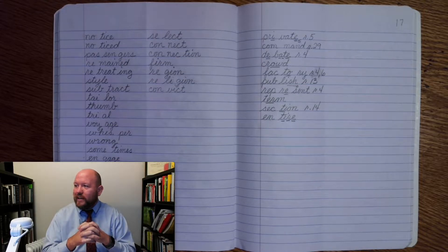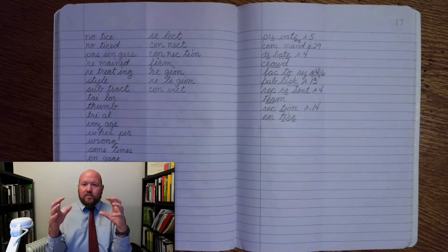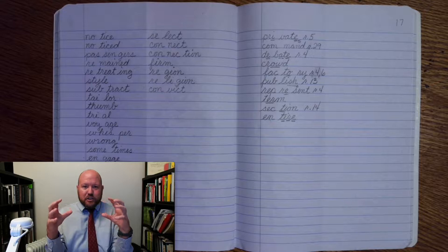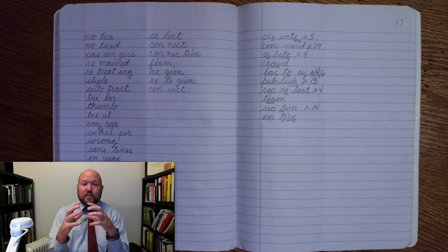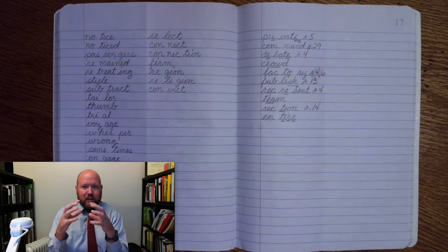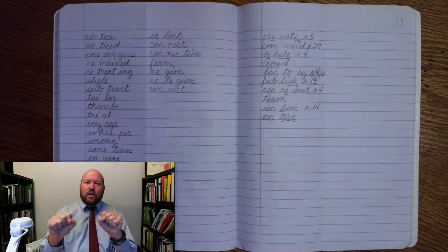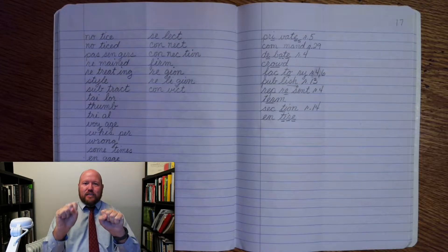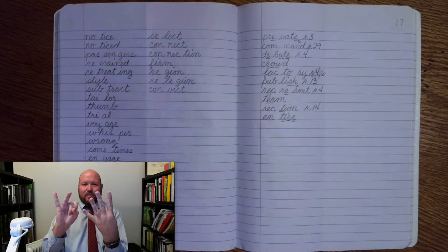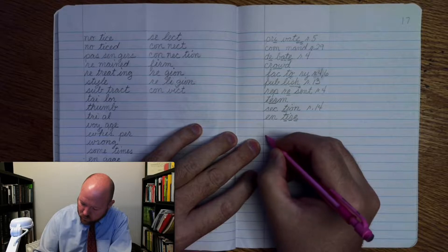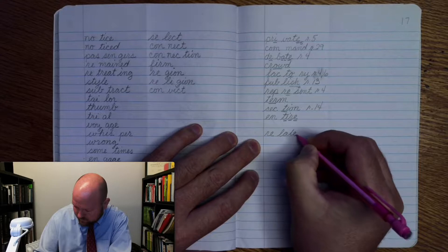Our first word for the day is relate. Relate means what do two things have in common. So how do multiplication and addition relate? All multiplication is repeated addition, so they relate to each other. They have things in common. Here we go. Relate. Base word. Relate. Re-late. R-E-L-A-T-E. Relate. Write relate. Skip a line. Re-late.